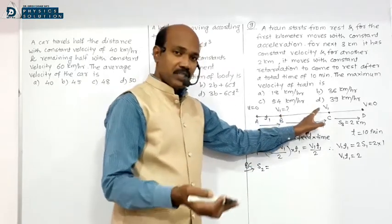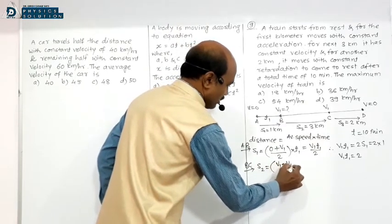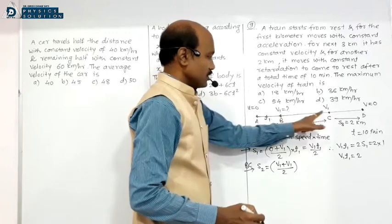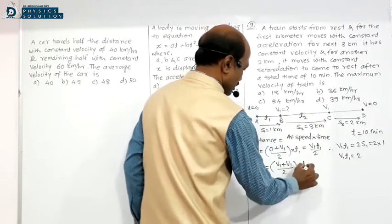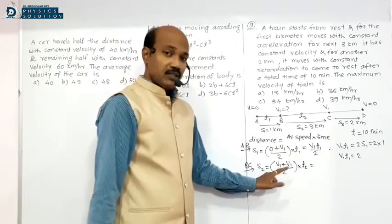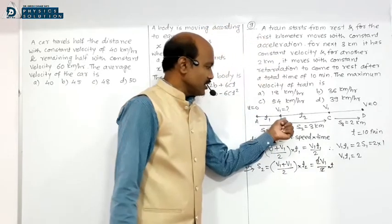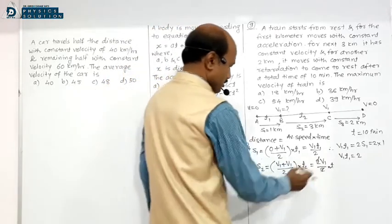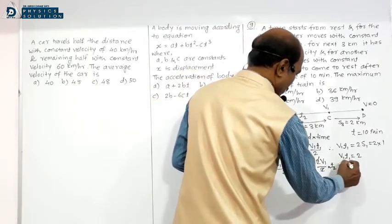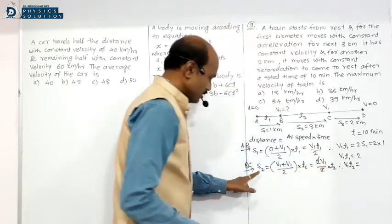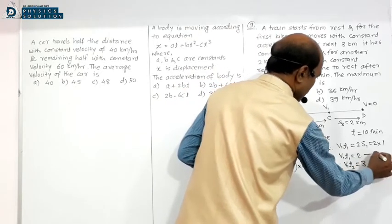For segment B to C: velocity at B is V1 and velocity at C is V1, so average speed is (V1 + V1)/2 = V1. Distance S2 equals V1 into T2. Therefore V1·T2 = S2 = 3. Let this be equation number 2.